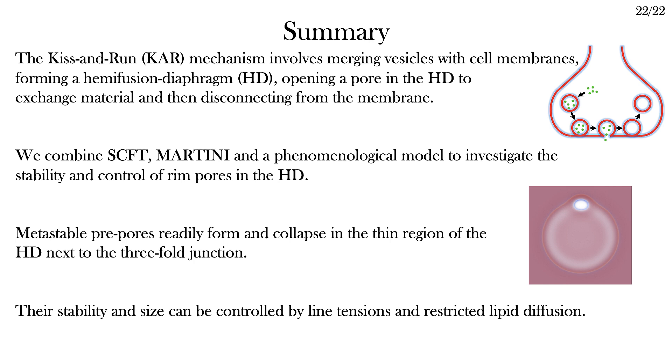Metastable prepores form along the rim of the hemifusion diaphragm, and they collapse quite readily, but they can also grow into larger rim pores. These rim pores can either be stable or critical, depending on the presence of a lipid reservoir, and the cell has a variety of mechanisms to control the shape and size of these critical pores, and therefore to control whether these pores have a tendency to grow or shrink by controlling the line tensions.